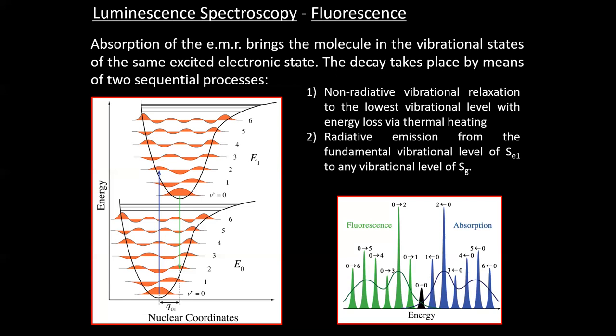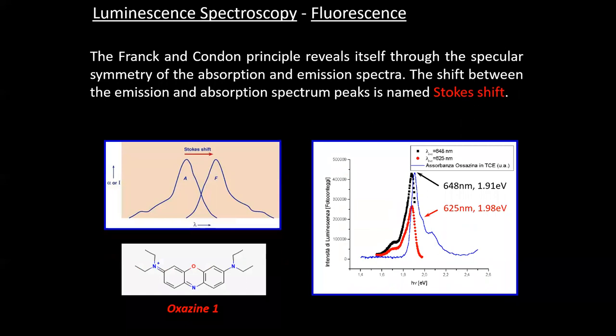The Stokes shift is defined as the energy or wavelength difference between the peaks of the absorption and emission spectra. In the case of oxazine 1 — the molecule used in these experiments — the Stokes shift between absorption and emission is very small, so this is a molecule with a small Stokes shift.